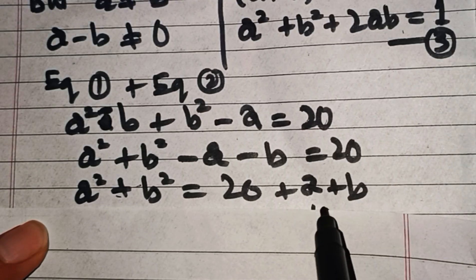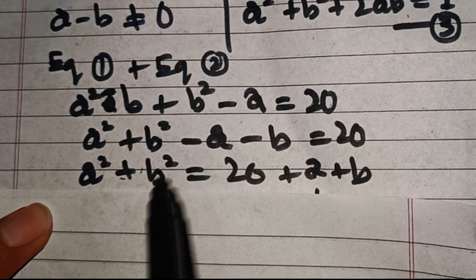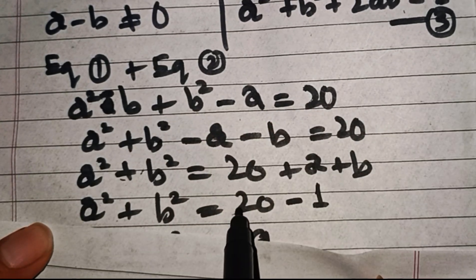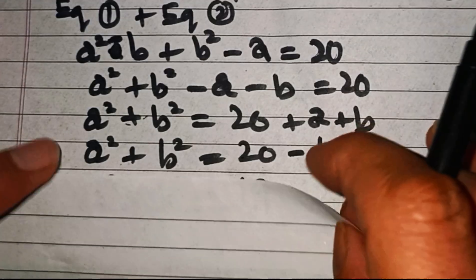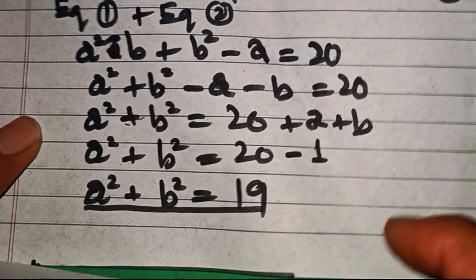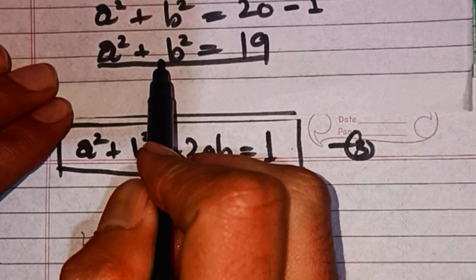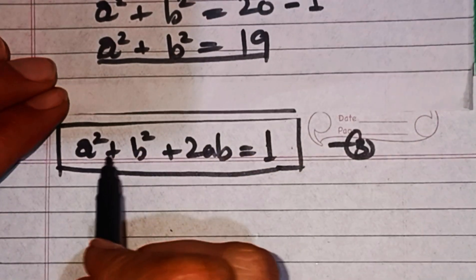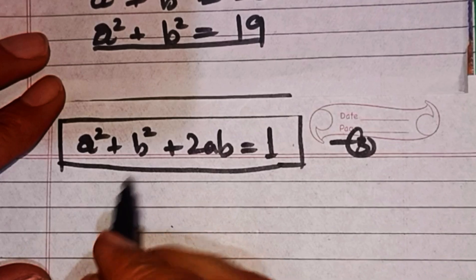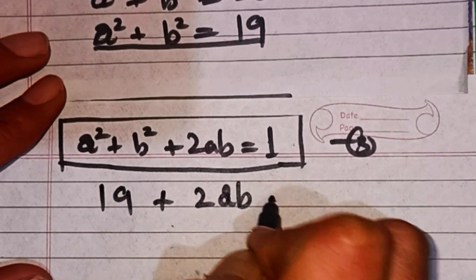Now we substitute the value of a + b = -1 into this equation: a² + b² = 20 + (-1) = 20 - 1 = 19. So a² + b² = 19. Now putting this value into equation three, which is a² + b² + 2ab = 1, we get 19 + 2ab = 1.